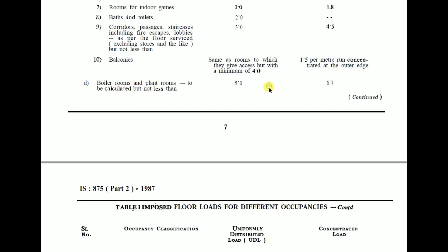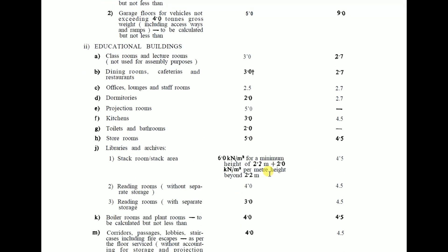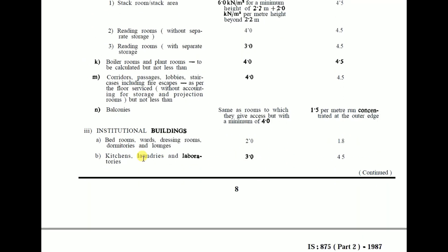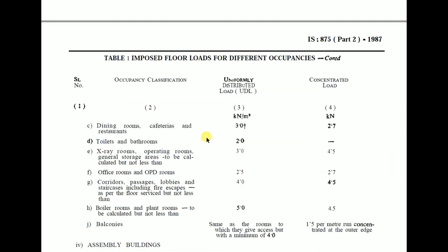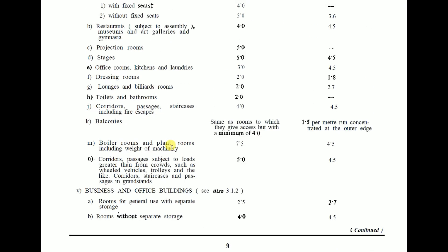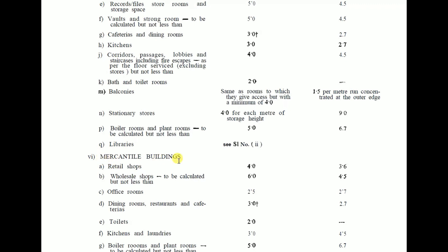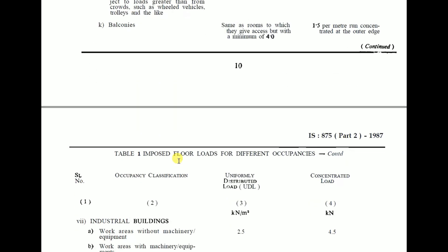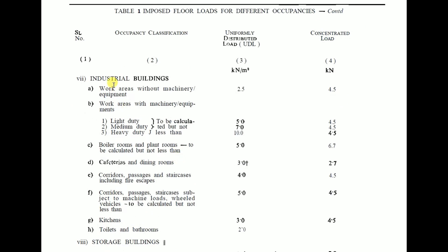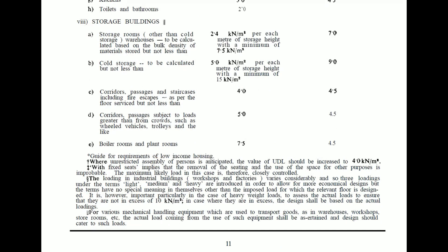For educational buildings, live loads are separately given in IS 875 Part 2. Other building categories covered include institutional buildings, assembly buildings, business and office buildings, mercantile buildings, industrial buildings, and storage buildings. All types of buildings have been covered, and according to occupancy and usage we need to consider the appropriate live load.